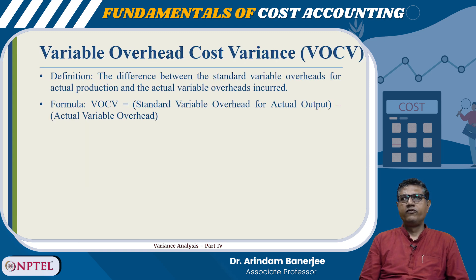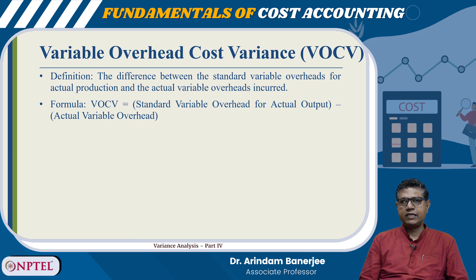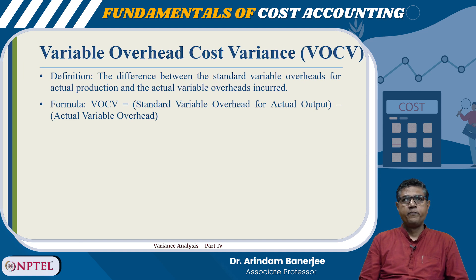The first one is variable overhead cost variance, very similar to the material cost variance and labour cost variance. The formula is: standard variable overhead for actual output minus actual variable overhead. This is the difference between the standard variable overheads for actual production and the actual variable overheads incurred. You take your actual output, calculate as per standard what the variable overhead should be, and then compare it with the actual variable overhead incurred. If the actual variable overhead is more than the standard variable overhead for actual output, we say it is adverse.